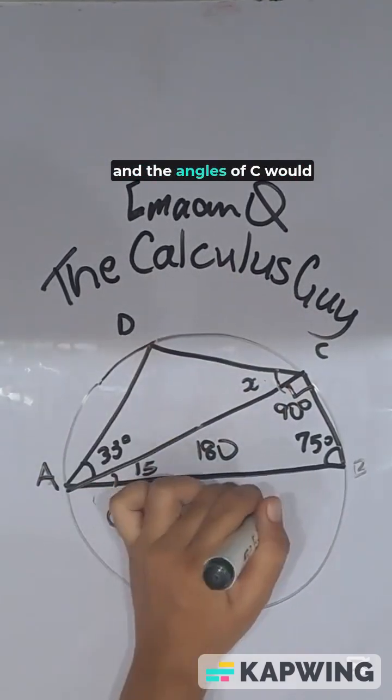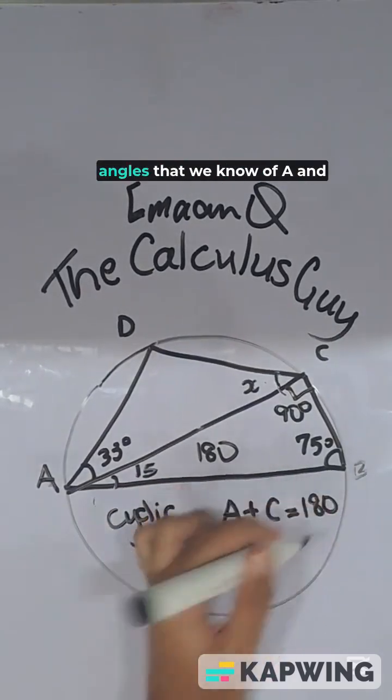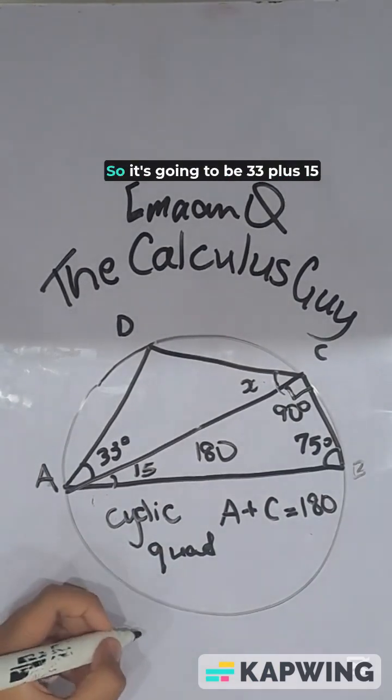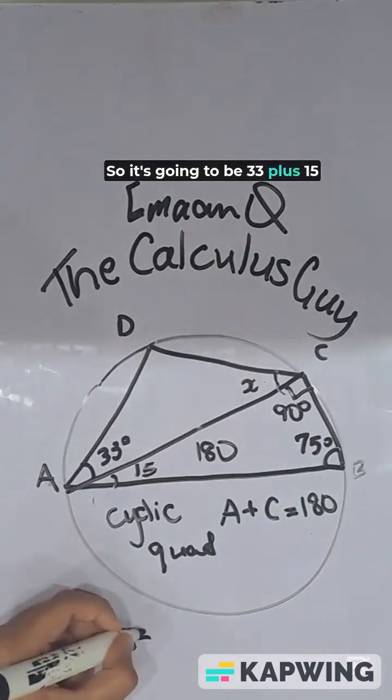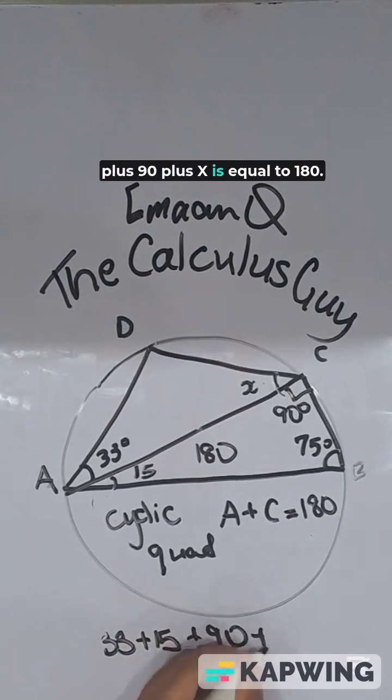So that would mean the angles of A and the angles of C would add up to 180. So now let's add up all of the angles that we know of A and C and make them 180. So it's going to be 33 plus 15 plus 90 plus X is equal to 180.